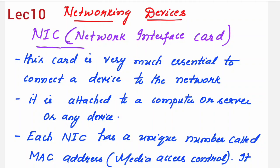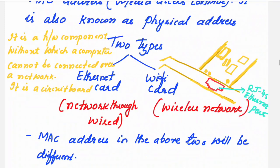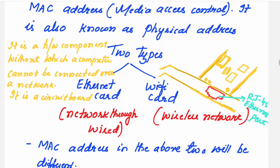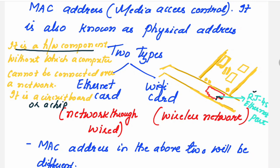Welcome to this video lecture series on computer networks lab. Today's topic is the NIC — Network Interface Card. This card is essential to connect a device to a network. It is a hardware component without which a computer cannot be connected over a network — a circuit card or chip. The NIC is placed inside the computer, but on the outside you will see a slot, a port, which is the RJ45 ethernet port.